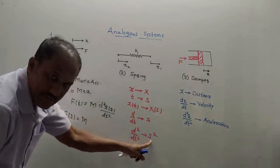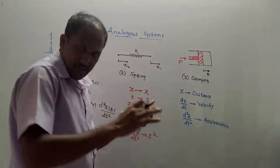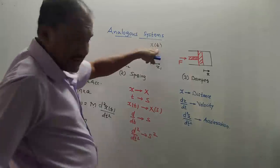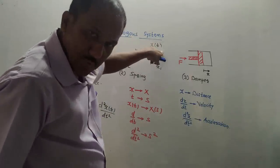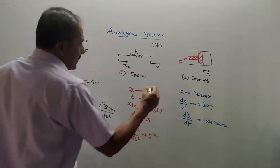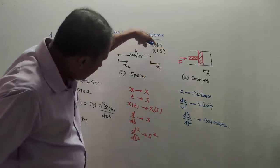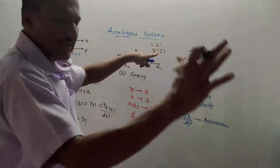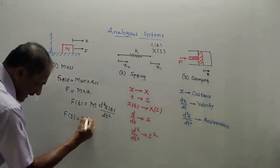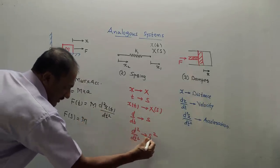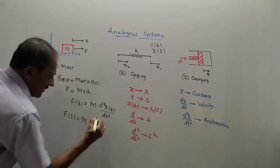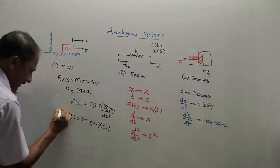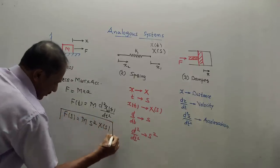In usual cases we write X(t) where t is the time period, so X is a function of time. In Laplace the notation is capital X(S) — similar to t, S is the notation in Laplace, it is simply a variable. So keeping M as is, d²/dt² is replaced by S², and X(t) is replaced by X(S). The equation becomes: F(S) = M·S²·X(S).